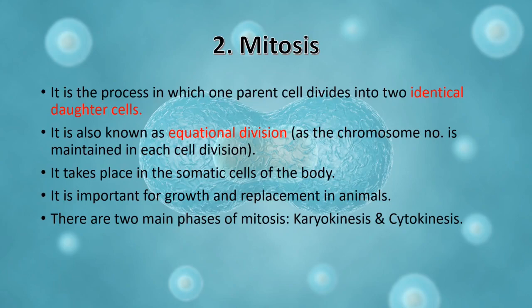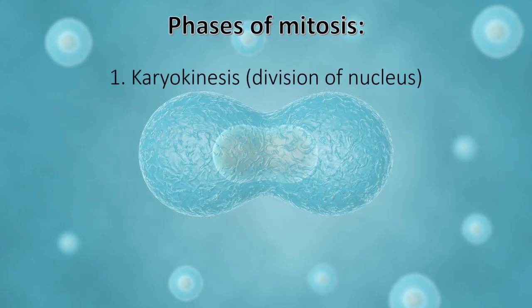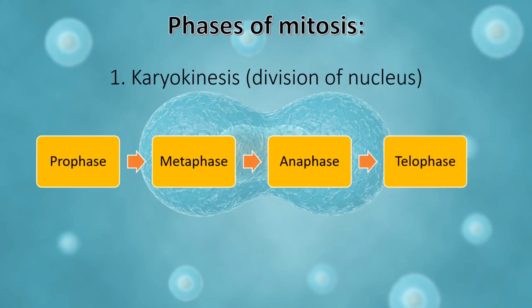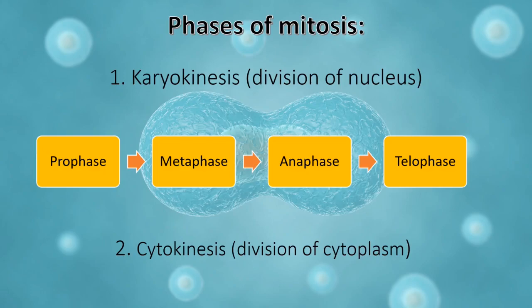There are two main phases of mitosis: karyokinesis and cytokinesis. Karyokinesis is the division of the nucleus, which takes place in four steps: prophase, metaphase, anaphase, and telophase. By the end of telophase the cell will have two nuclei. After telophase, the cell undergoes cytokinesis, which is the division of the cytoplasm. At the end of cytokinesis we have two identically looking daughter cells. We will not cover these in detail here, but you can follow the next classes.